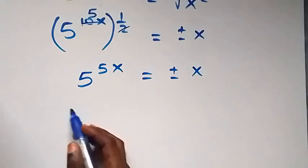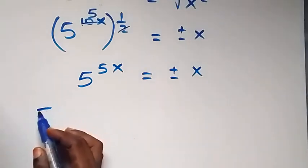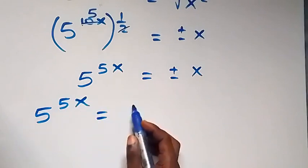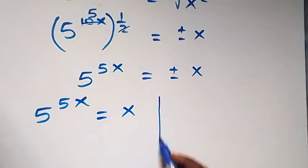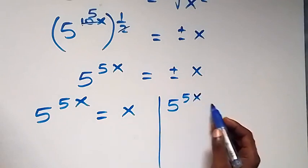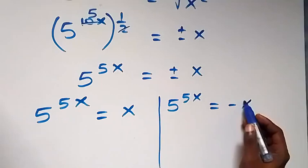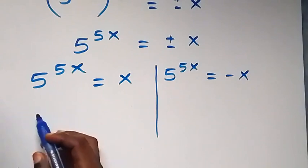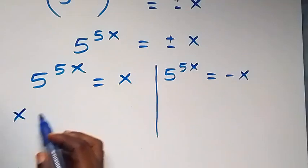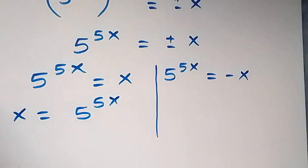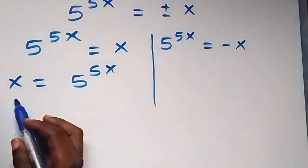Then in the two cases here, we have the first one: 5 raised to power 5x equals to x. We can also write this as x equals to 5 raised to power 5x. Then from here, let's divide both sides by 5 raised to power 5x.